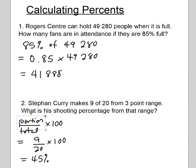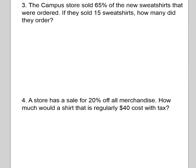Punch 9 divided by 20 times 100 into your calculator and you'll find he's shooting 45 percent from that range — not bad, although probably a little below what he's capable of, because he's a pretty good shooter from three-point range. Now let's look at more examples. The campus store has sold 65 percent of the new sweatshirts that were ordered. If they sold 15, how many did they order?